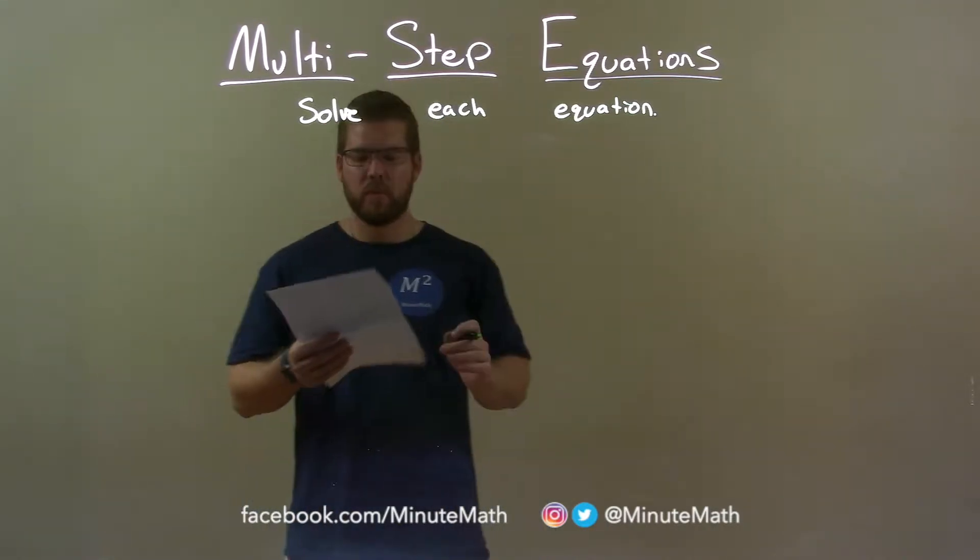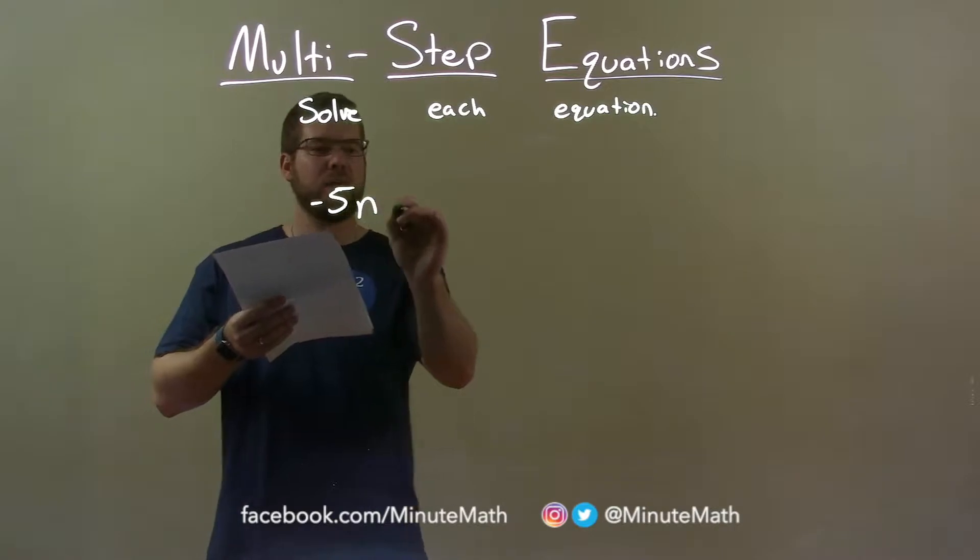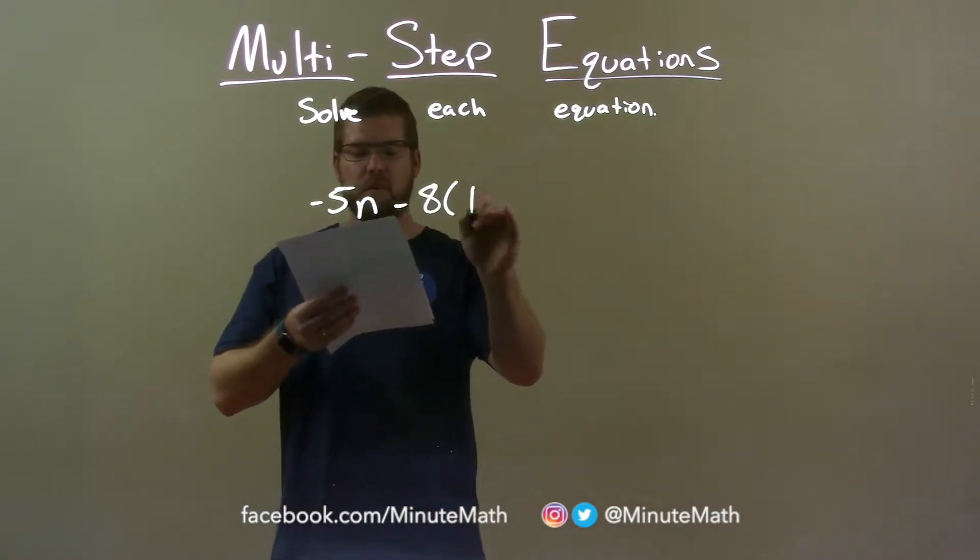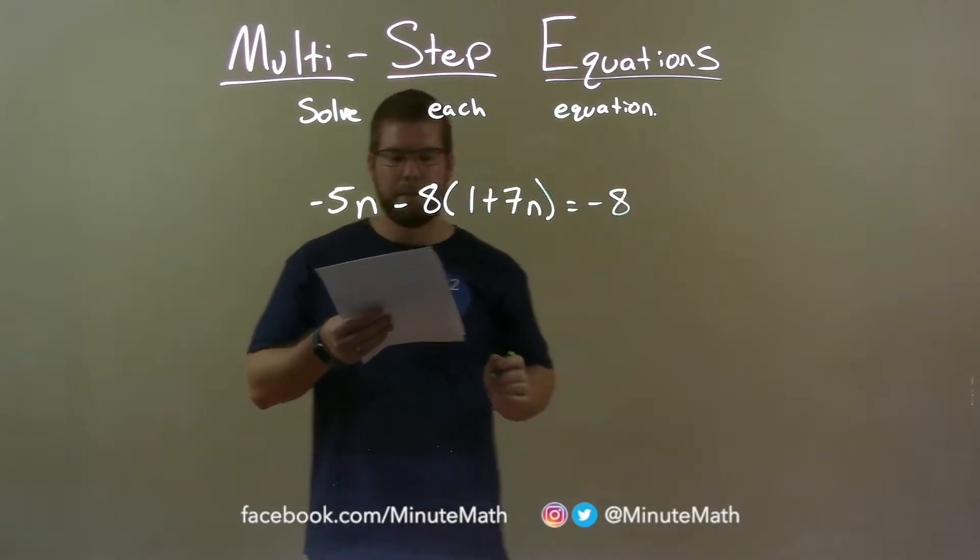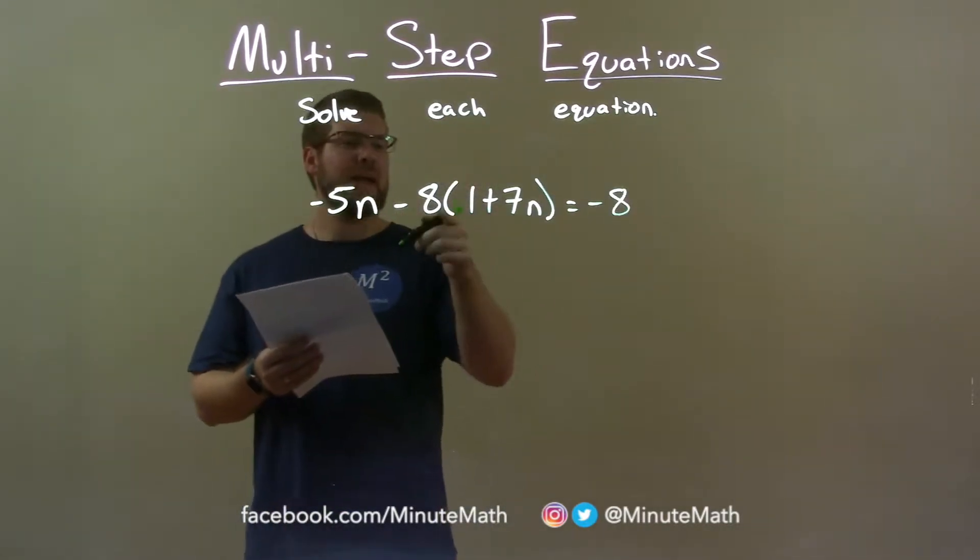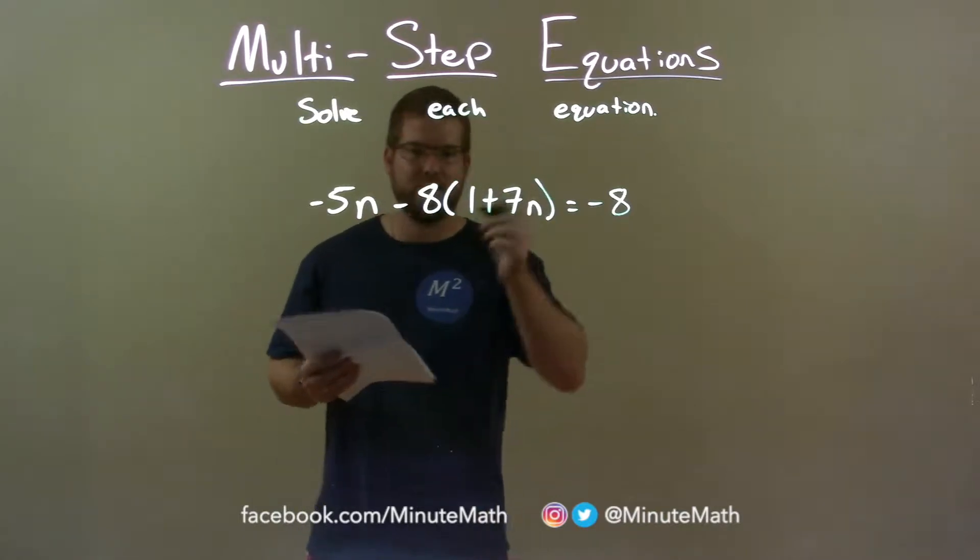If I was given this equation negative 5n minus 8 times 1 plus 7n equals a negative 8, first thing I'm going to do here is distribute that 8 or minus 8 to both parts in the parentheses.